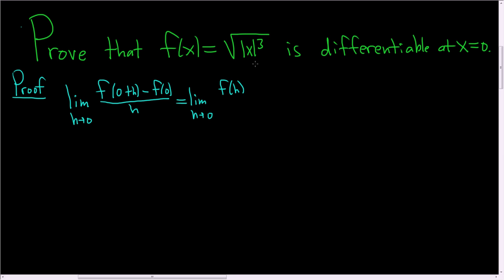Let's go ahead and evaluate f of 0. If you plug in 0, you're simply going to get the square root of the absolute value of 0 cubed. Well, that's the square root of 0, which is just 0.